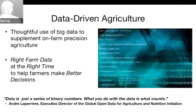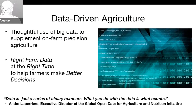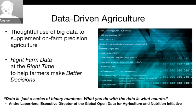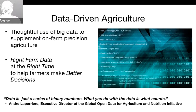Data-driven agriculture is really the thoughtful use of big data — whether about the weather, your soil, your farm economics, or the market — to supplement on-farm what we call precision agriculture. Precision just means you're using some type of equipment or machine where you've fed in data and done some analysis. It's the right farm data at the right time to help farmers make better decisions. As André La Pierre said, it's not just the binary numbers — it's what you do with the data that counts.